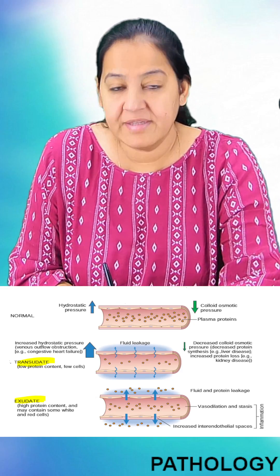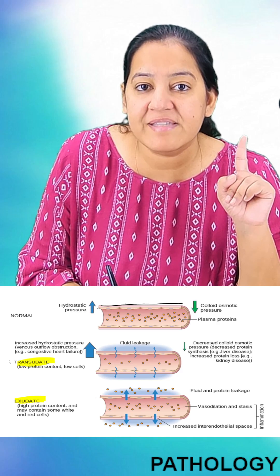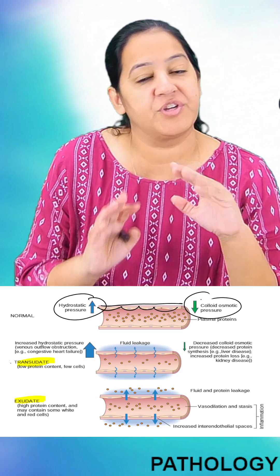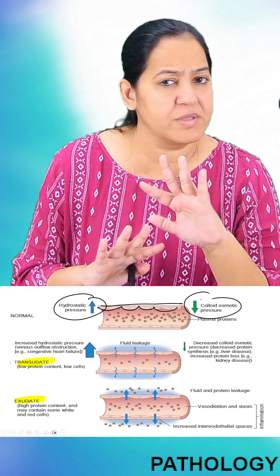You can see the first diagram. In this diagram, you can see the wall of the blood vessel is continuous. There are no gaps, no permeability, and the two types of pressure—outward and inward pressure—are equal and opposite. They cancel each other out, so there is no edema.